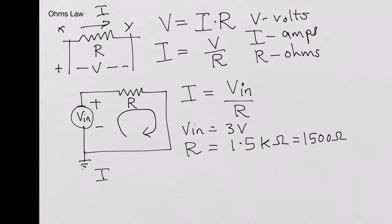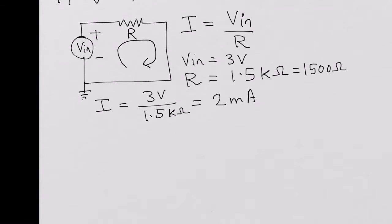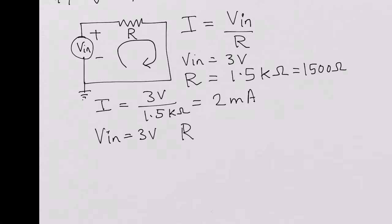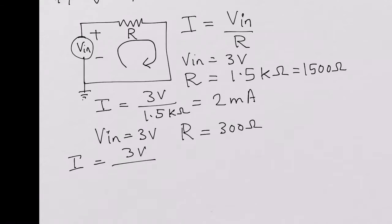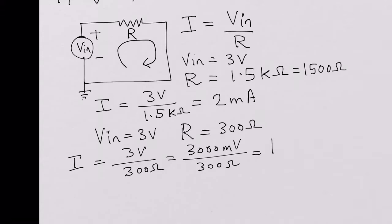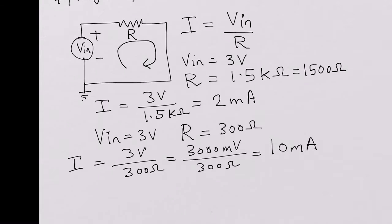The current I would be 3 volts divided by 1.5 kilo-ohms, which equals 2 milliamps. Now assume V_in is still 3 volts but the resistance R is now 300 ohms. The current I would be 3 volts divided by 300 ohms, which can also be written as 3000 millivolts over 300 ohms, giving a current of 10 milliamps.